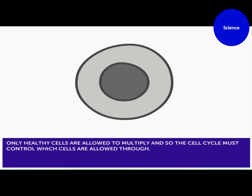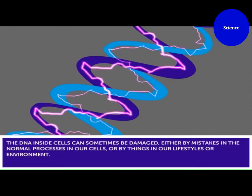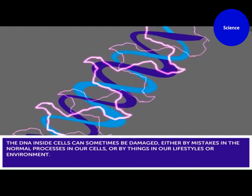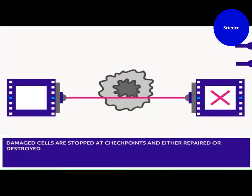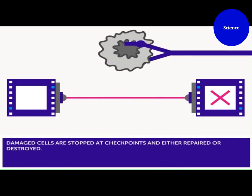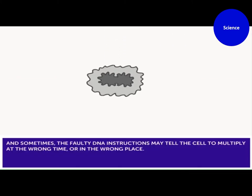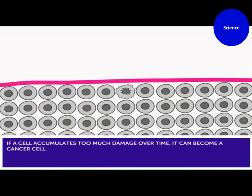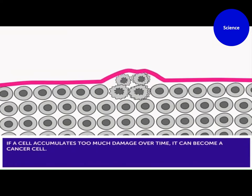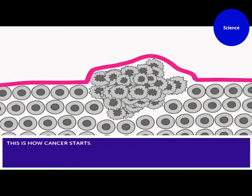Only healthy cells are allowed to multiply, so the cell cycle must control which cells are allowed through. The DNA inside cells can sometimes be damaged, either by mistakes in the normal processes in our cells, or by things in our lifestyles or environment. Damaged cells are stopped at checkpoints and either repaired or destroyed. But occasionally damaged cells can find a way to sneak through, and sometimes the faulty DNA instructions may tell the cell to multiply at the wrong time or in the wrong place. If the cell accumulates too much damage over time, it can become a cancer cell. They then multiply out of control to form a lump or tumour. This is how cancer starts.